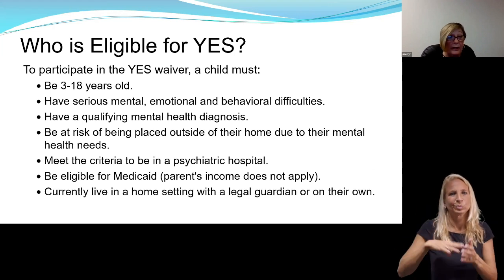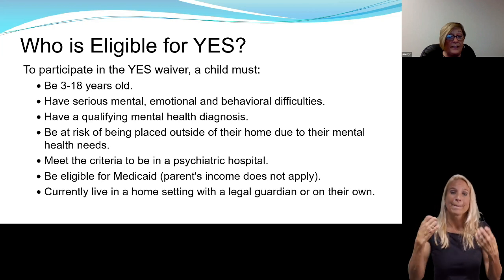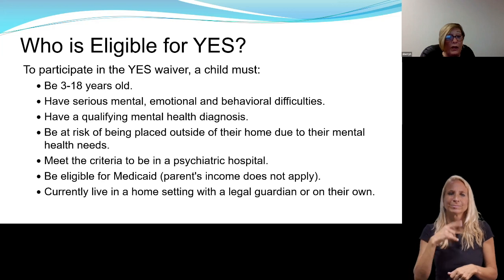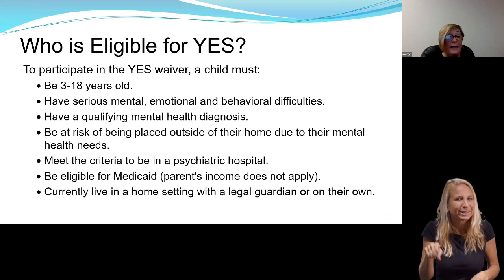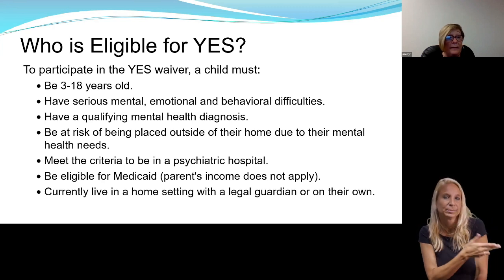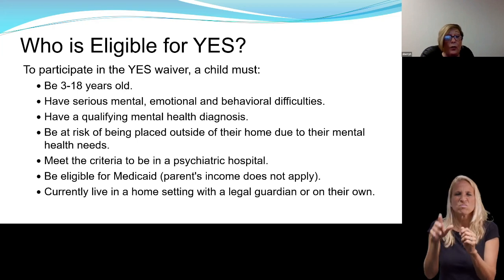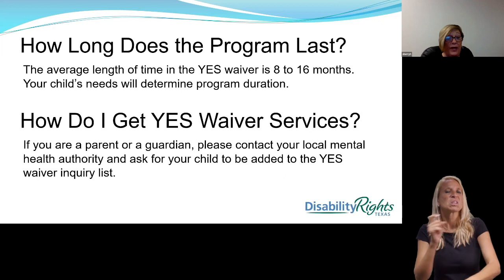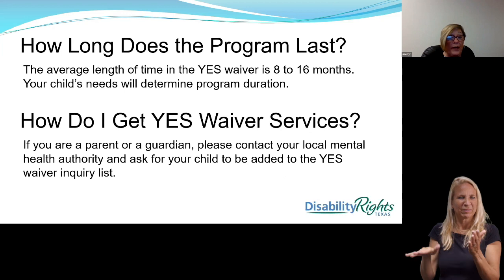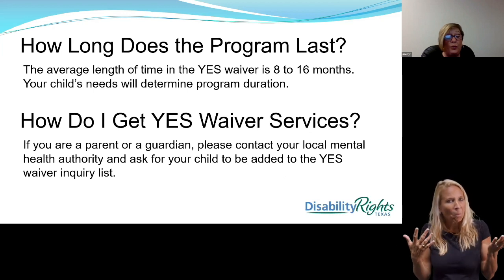Who is eligible for the YES waiver? A child must be between the ages of 3 and 18 years. They must have serious mental, emotional, and behavioral difficulties. They must have a qualifying mental health diagnosis. They must be at risk of being placed outside of their home due to their mental health needs. They must meet the criteria to be in a psychiatric hospital. They may be eligible for Medicaid. The parent's income does not apply. They must currently live in a home setting with a legal guardian or on their own. The average length of the YES waiver program is 8 to 16 months; your child's needs will determine the program duration. To access the YES waiver, contact your local mental health authority and ask for your child to be added to the YES waiver inquiry list.